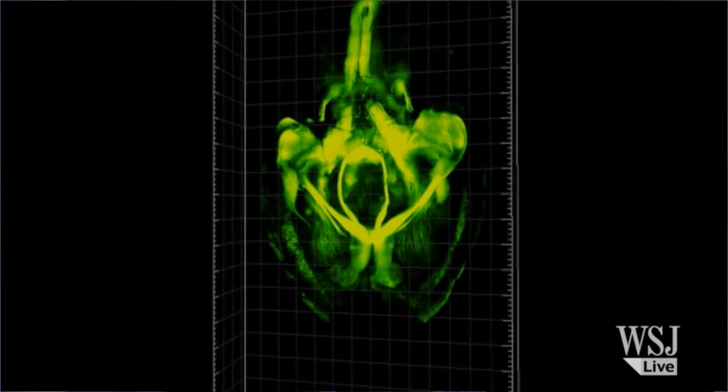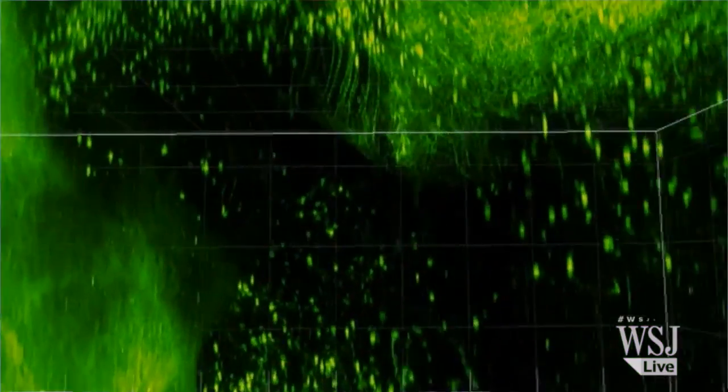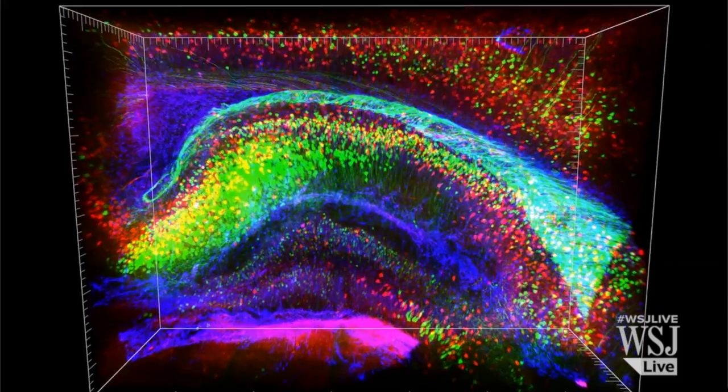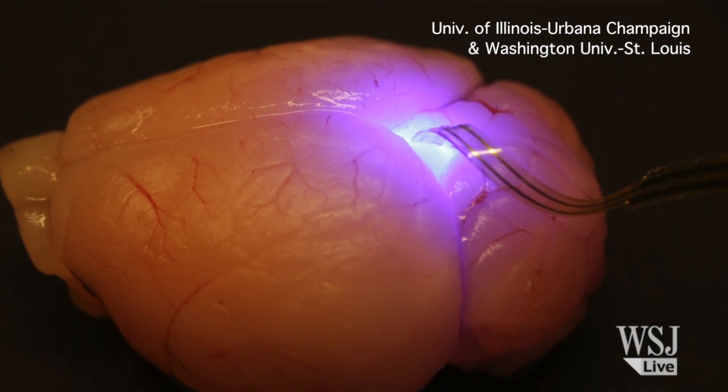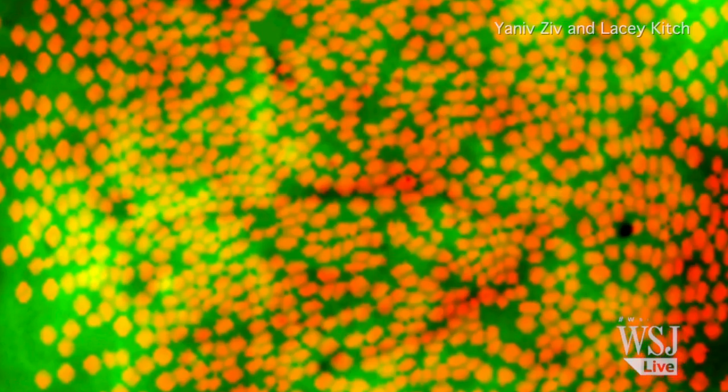And until very recently, scientists had only a rough idea how all these neurons working together created our thoughts, actions, and memories. But in a flurry of innovation this year, neuroscientists have developed new techniques to map all these brain circuits.